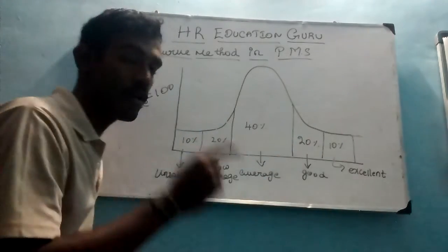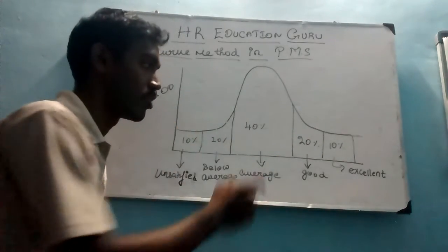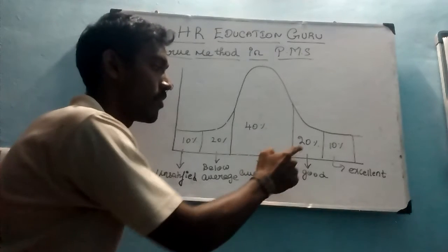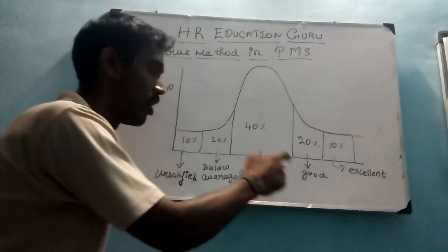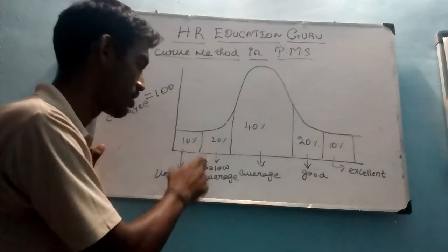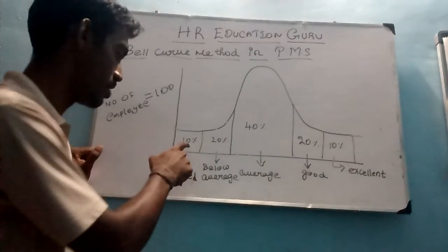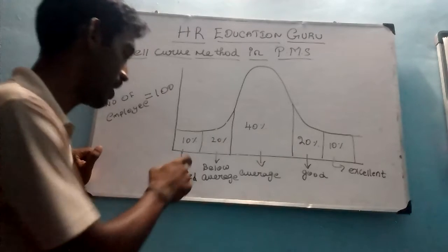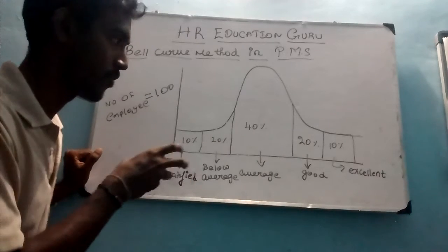10% of employees are excellent, 20% of employees are good, 40% is average, 20% is below average, and 10% is unsatisfactory.